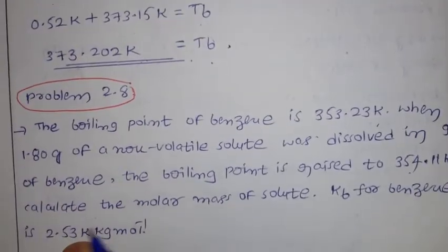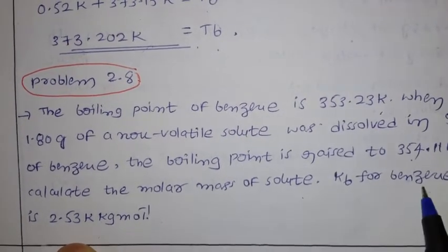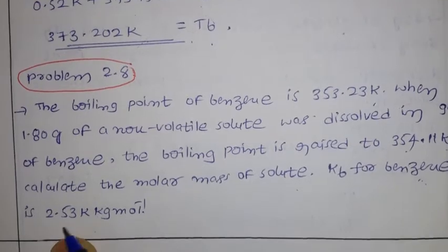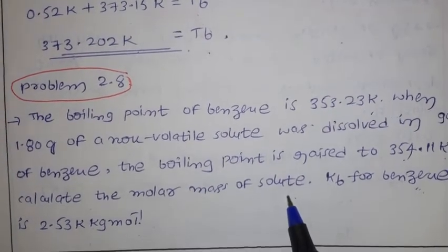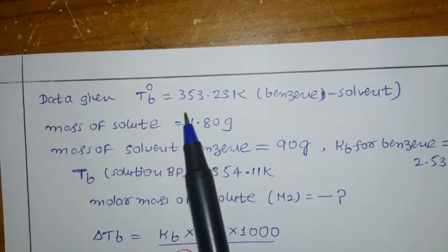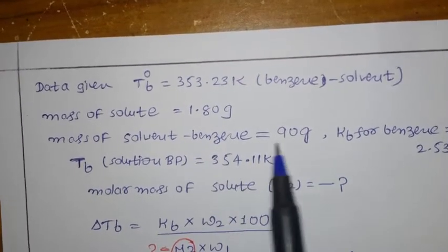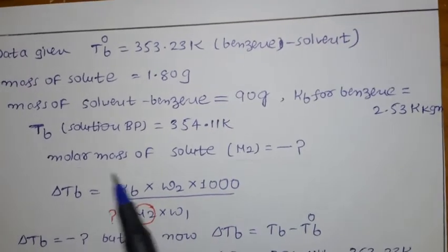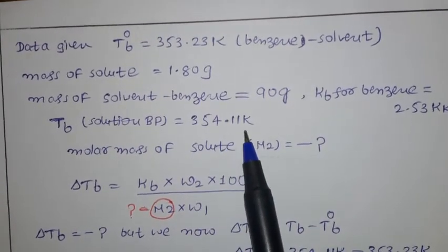So the pure solvent benzene has boiling point 353.23 K, and after adding the solute it rises to 354.11 K. We need to calculate the molar mass of the solute. Kb for benzene is given as 2.53 kelvin·kg per mole. Given data: Tb° = 353.23 K, mass of solute = 1.80 g, mass of solvent = 90 g, Kb = 2.53 K·kg/mol. Tb of solution = 354.11 K.